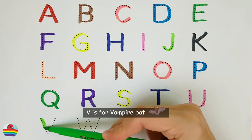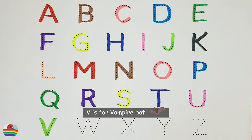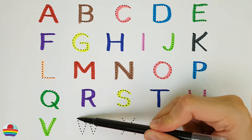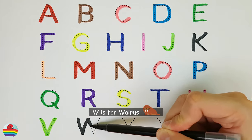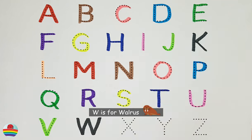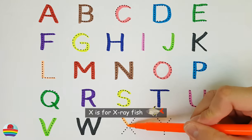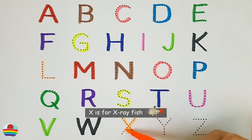V. V is for vampire bat. V. W. W is for walrus. W. X. X is for X-ray fish. X.